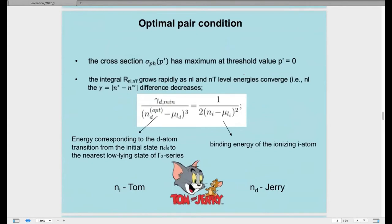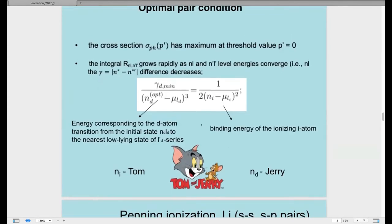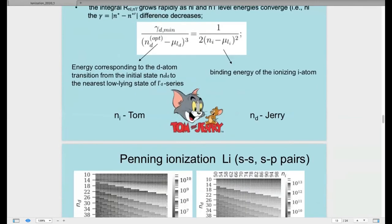And here we see optimal pair conditions. Based on the autoionization width maximum conditions, Penning ionization is most effective if the photoionization cross-section has maximum threshold value and the second condition is that the atom undergoes a transition from initial state to a deeper adjacent bound state. So we can see left energy corresponding to the atom transition from the initial state to the nearest low-lying state and the right is binding energy of the ionizing atom. We call it Tom and Jerry: Tom is greater than Jerry.